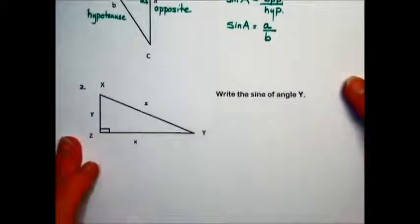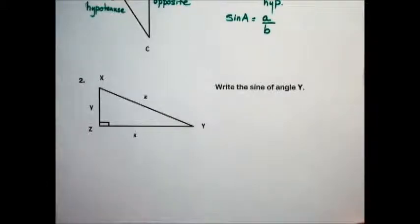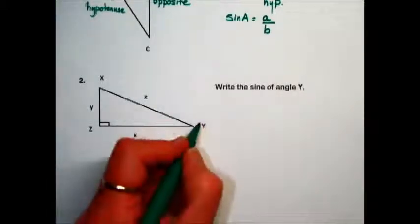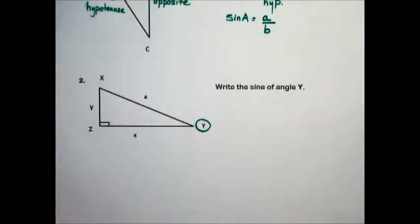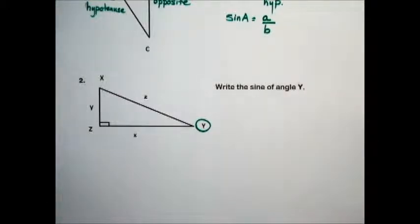In problem number two, it's asking us to write the sine of angle Y. That makes Y our reference angle. And to write this ratio, we first need to identify the sides of this triangle.